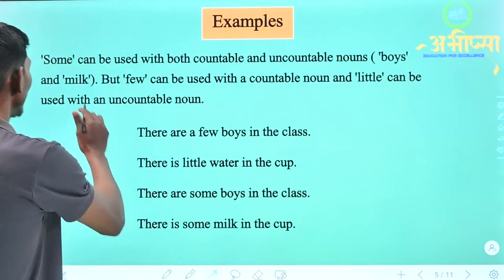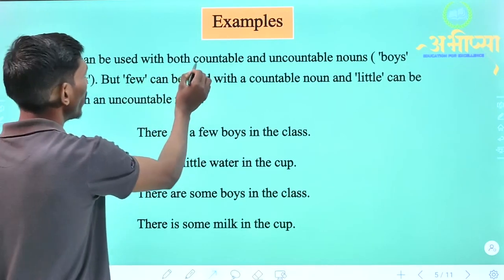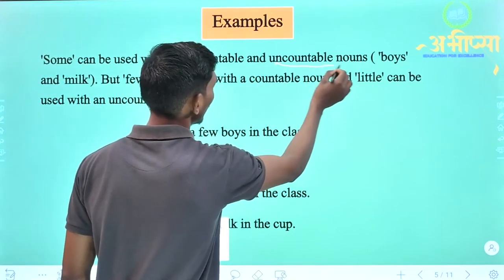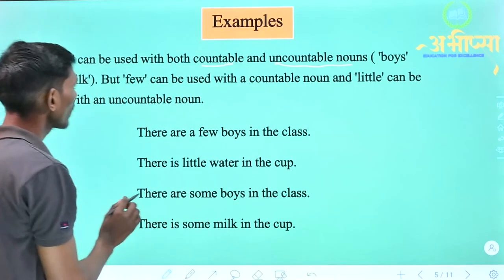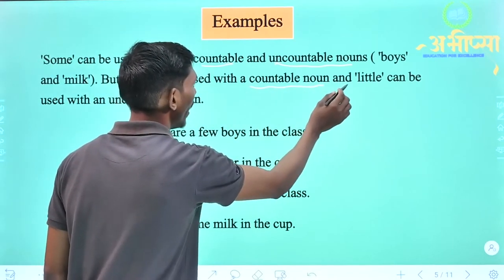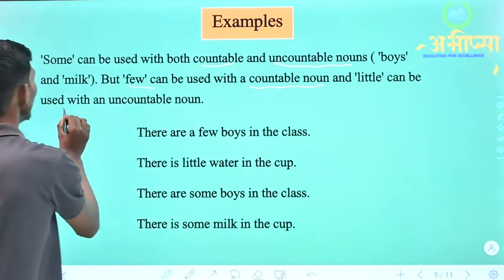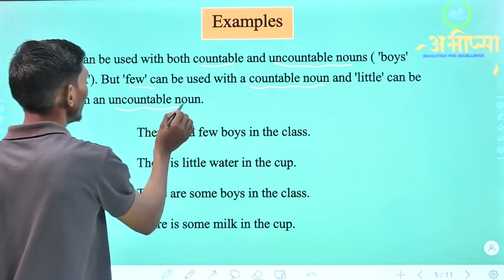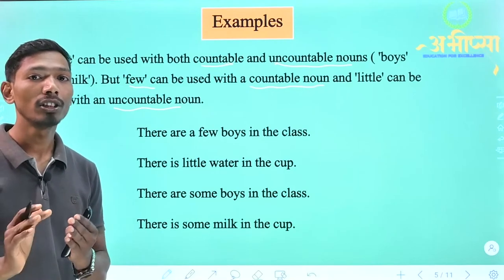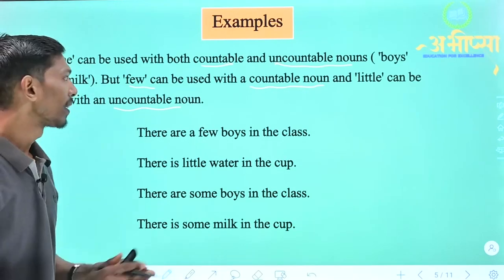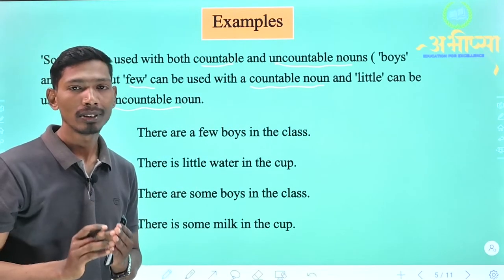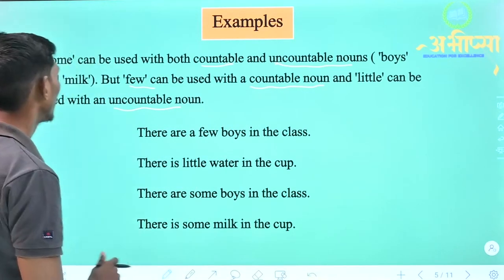Some can be used with both countable noun and uncountable nouns. Few can be used with a countable noun and little can be used with an uncountable noun. Some ka use hum countable and uncountable dono ke saath kar sakte hain, jabki few ka use hum countable noun ke saath karte hain aur little ka use hum uncountable noun ke saath karte hain.